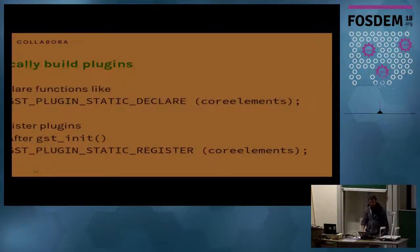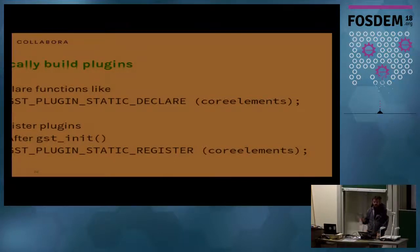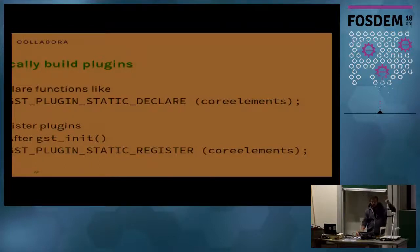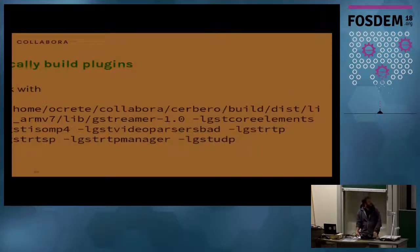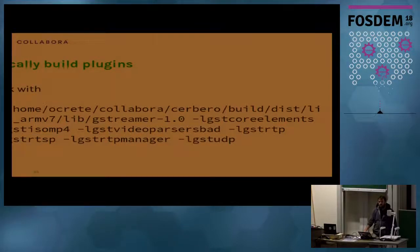Next, we have to statically link all the plugins so we can have a nice static build with everything needed. In GStreamer, to statically link plugins, first we declare one function per plugin using the first macro in the C file, then just after GST init we call the second macro which registers the plugins. This is only needed for static plugins because for dynamic ones, GST init iterates the files and registers them automatically. Then we link with a big -L flag pointing to the path where the plugins are and manually link each library separately.